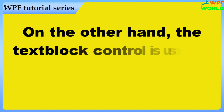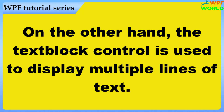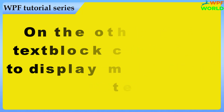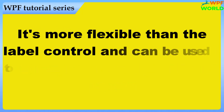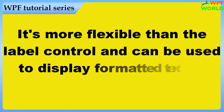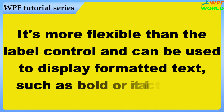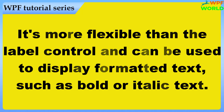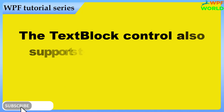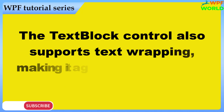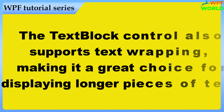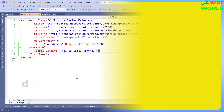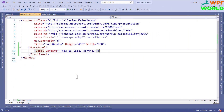On the other hand, the TextBlock control is used to display multiple lines of text. It's more flexible than the Label control and can be used to display formatted text, such as bold or italic text. The TextBlock control also supports text wrapping, making it a great choice for displaying longer pieces of text. Now let's see with an example.